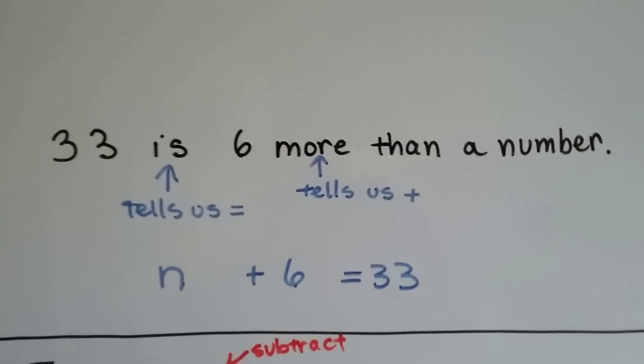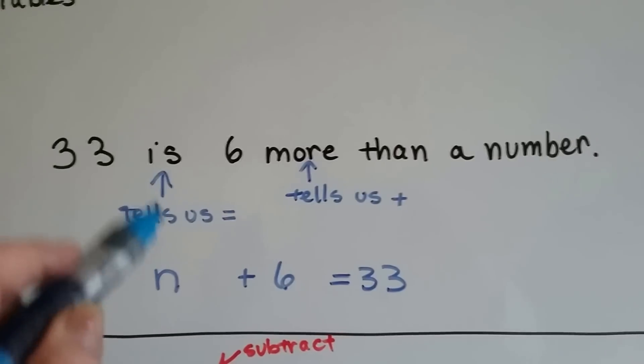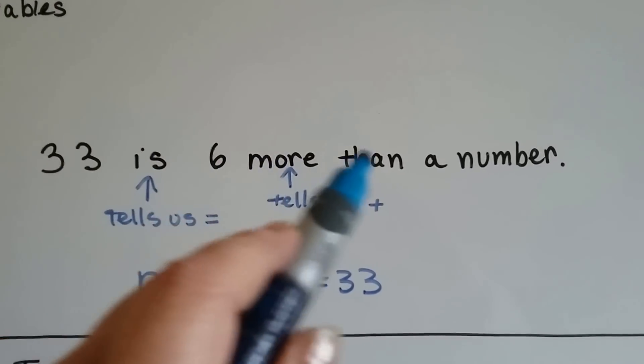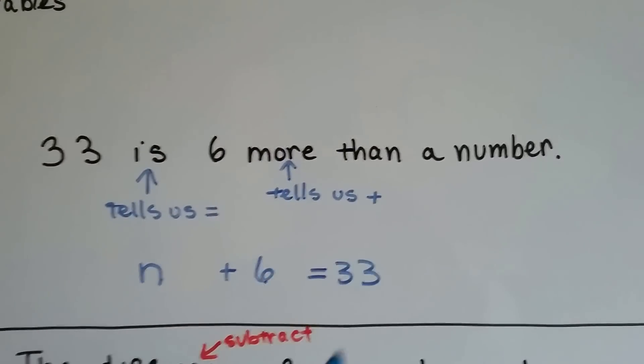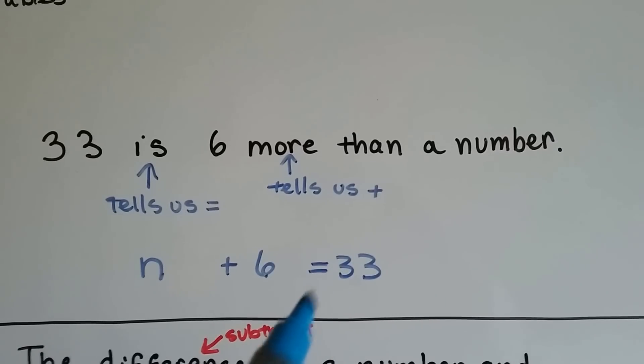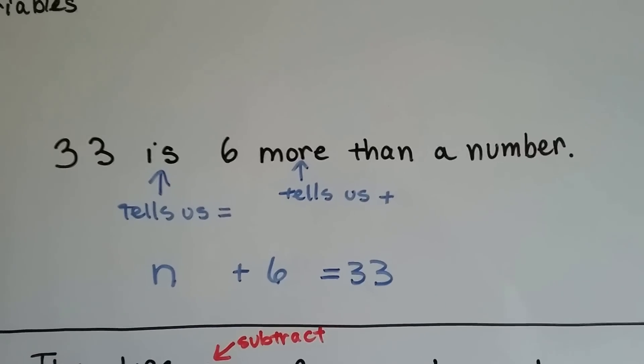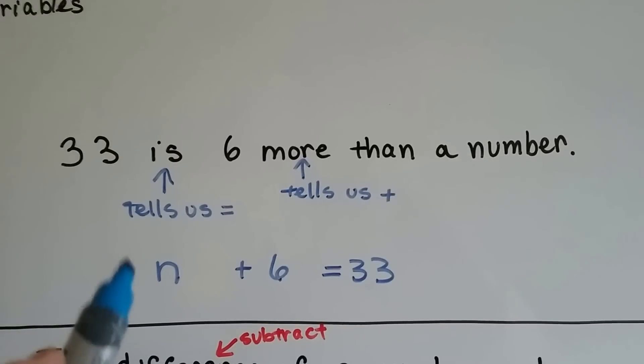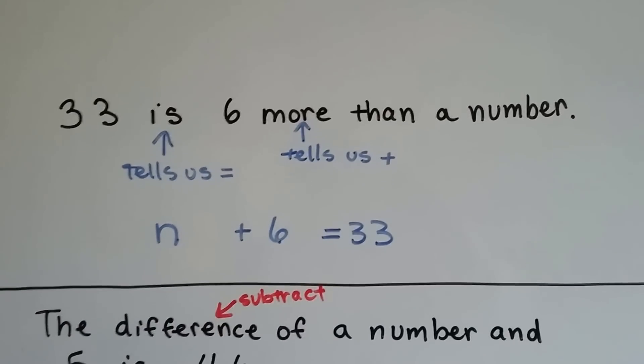33 is 6 more than a number. Well, this tells us that it's an equal sign. 33 equals 6 more than a number and the more tells us plus. So, 33 is equal to 6 plus a number. We could have written the other way around, too. We could have put the 33 over here equals 6 plus N. It still would have been okay.